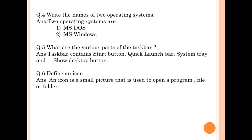Question number 4: Write the names of two operating systems. Answer: Two operating systems are Number 1: MS-DOS, and Number 2: MS-Windows.